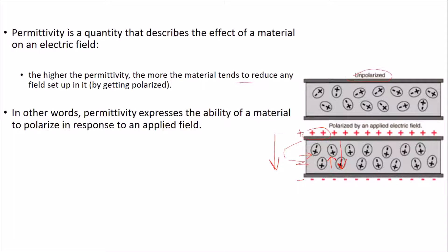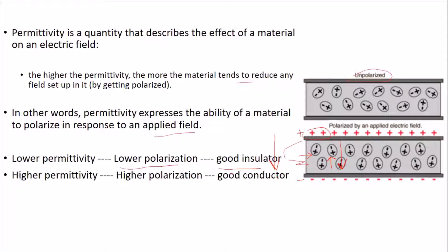We can say that the permittivity expresses the ability of a material to polarize in response to an applied field. For a material which has lower permittivity, it will have lower polarization, and we say such a material is a good insulator. On the other hand, if a material has higher permittivity, it will have higher polarization in response to an external field, and we say it is a good conductor.